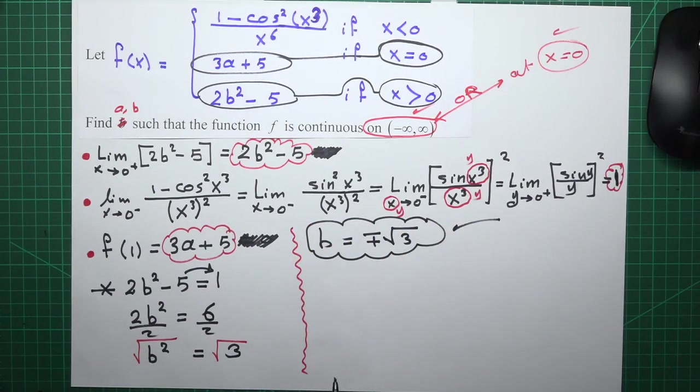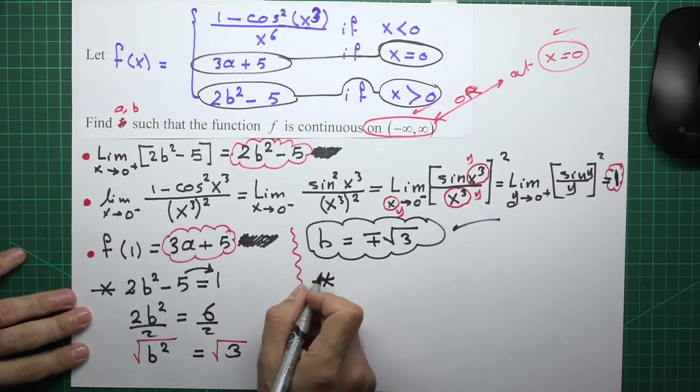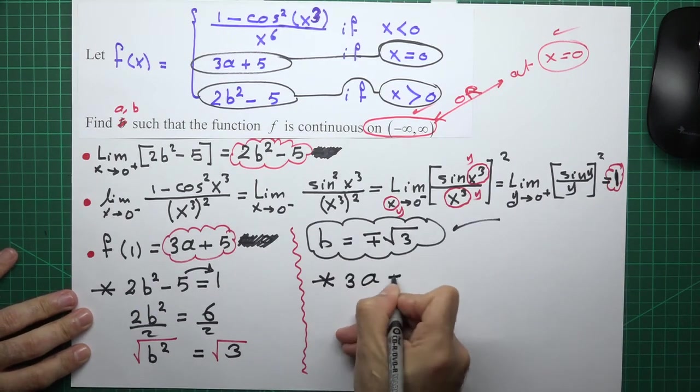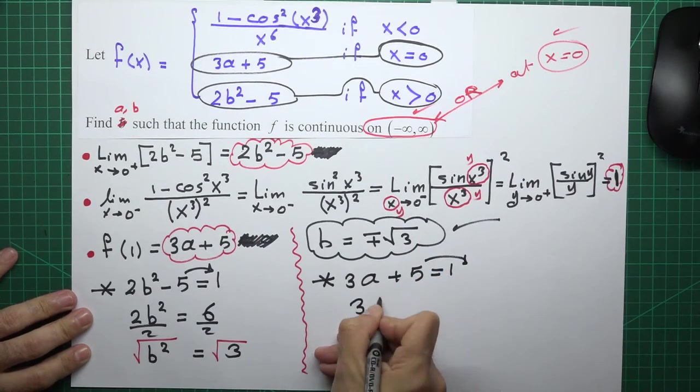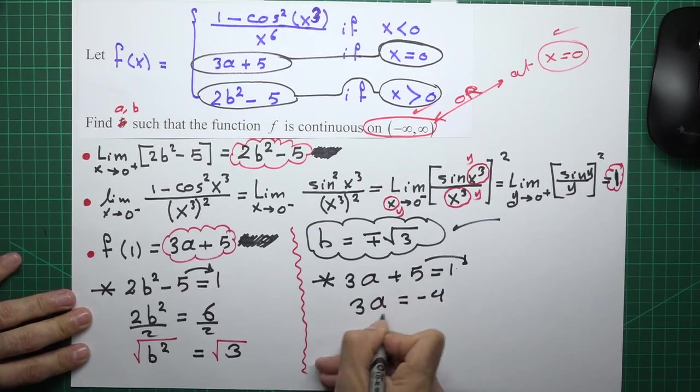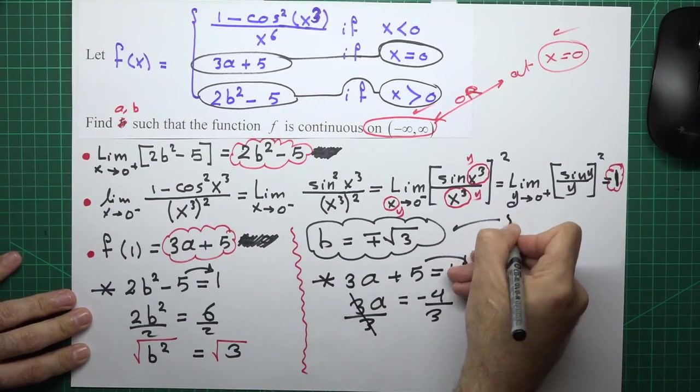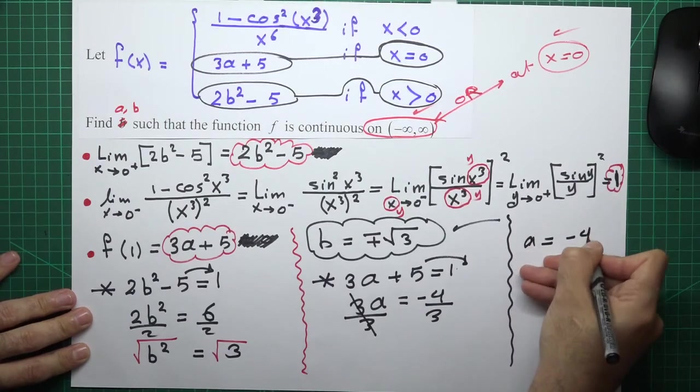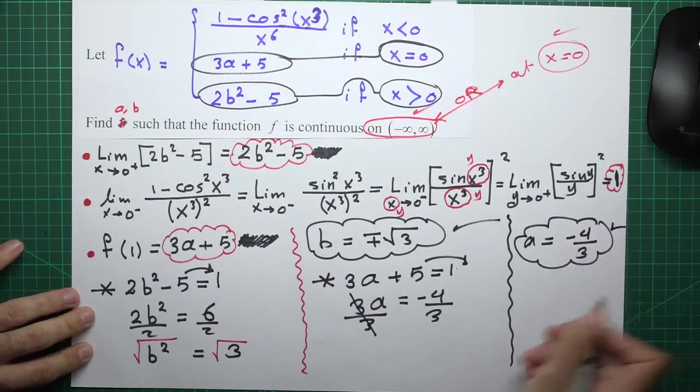This is b. How to find a? 3a plus 5 equals 1. So 3a equals minus 4 (1 minus 5). Divide by 3. A equals minus 4 over 3. This is a.